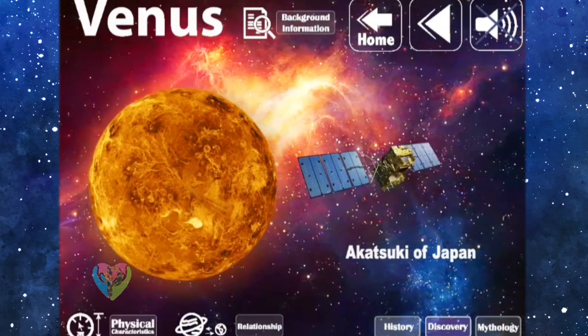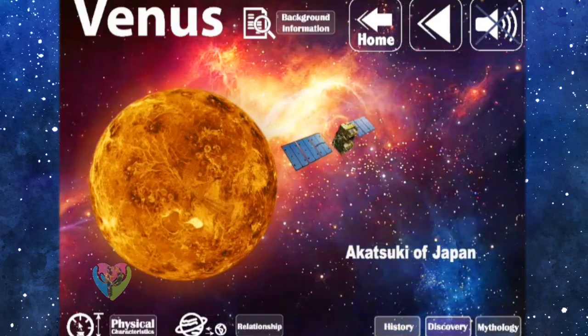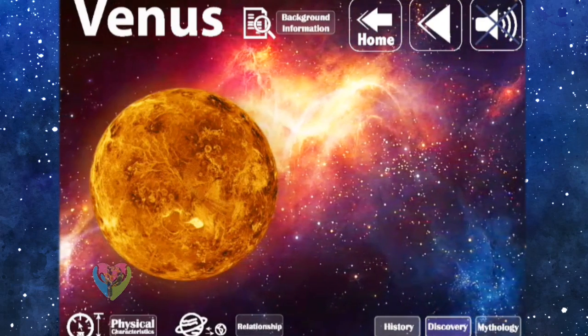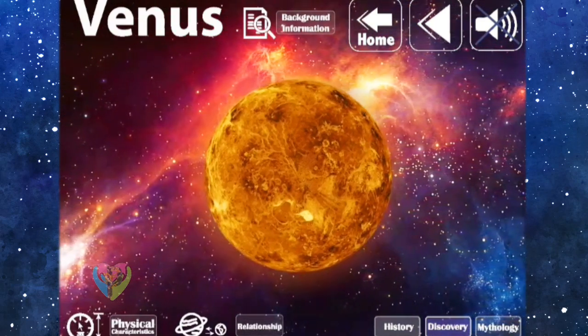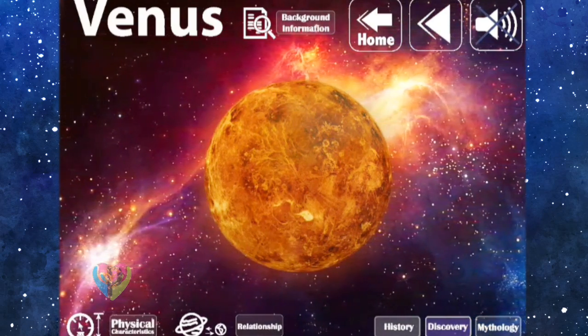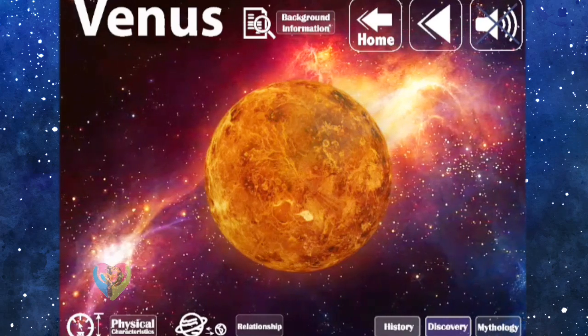Later on, there were many spacecraft that went to explore Venus. The latest spacecraft is Akatsuki of Japan, which has a highly elliptical orbit around Venus since December the 7th, 2015.